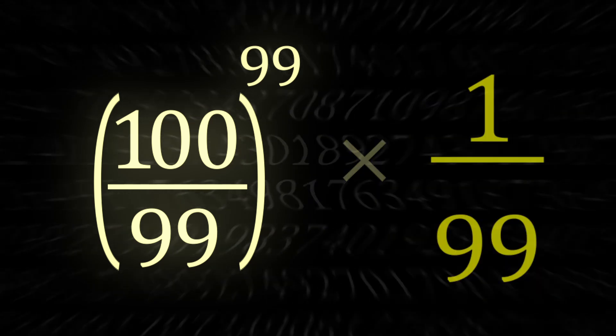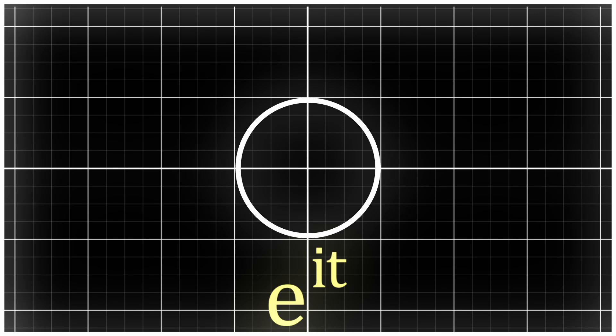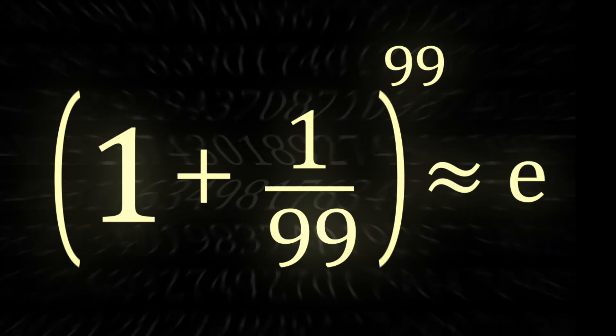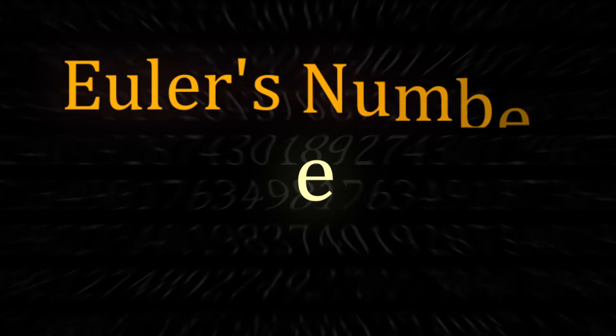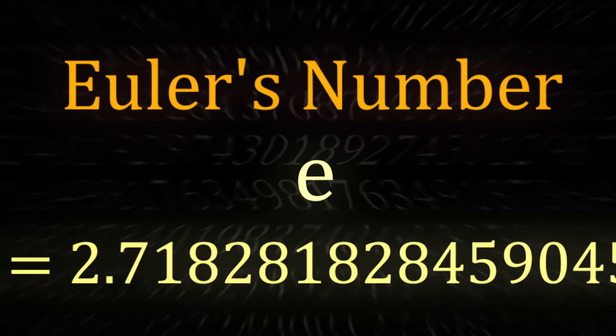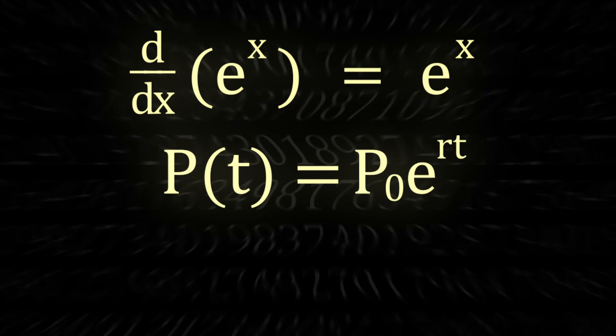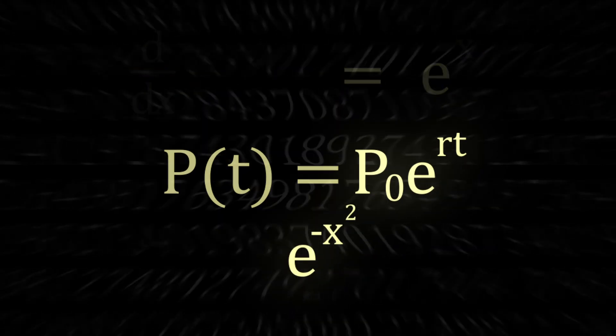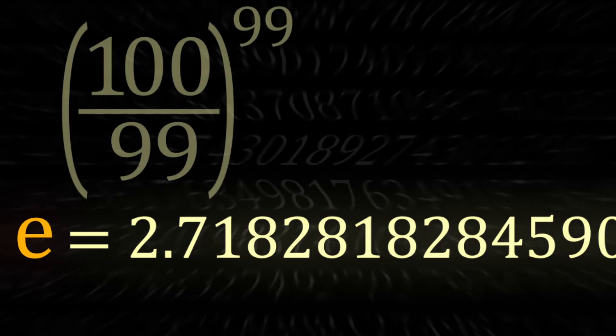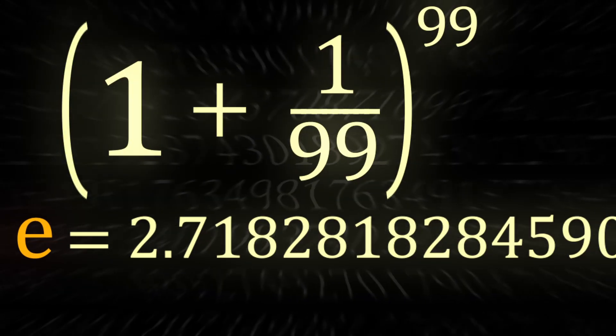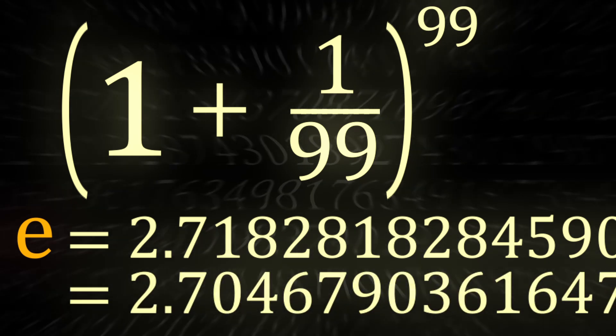For now we can neglect the 1 over 99 and focus on this interesting new ratio. It may be hard to see, but this value is actually something clearly defined in mathematics — it's a famous approximation for Euler's number. Essentially just a constant that keeps showing up all over mathematics, from calculus to finance to statistics. Since Euler's number is irrational and this is a ratio, it remains an approximation — a very precise one, but still an approximation.